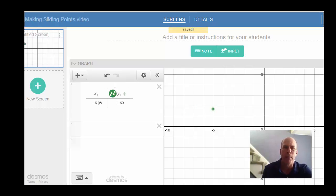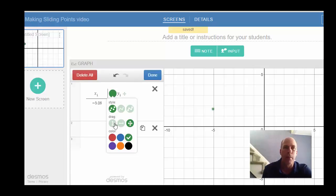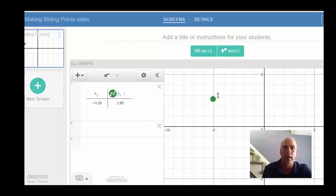But if I want to just make it an up and down point, I'm going to click this again, use my Settings gear, and now I can make it an up and down point. So now this point can only go in one direction, up and down.